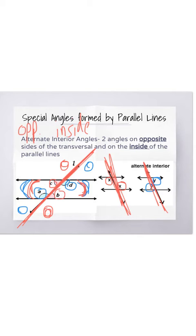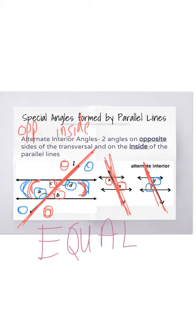The cool thing about alternate interior angles is that they are equal. So if you know what one measurement is, you will know what the other one is. So if one was 50 degrees, then we know the other is 50 degrees.